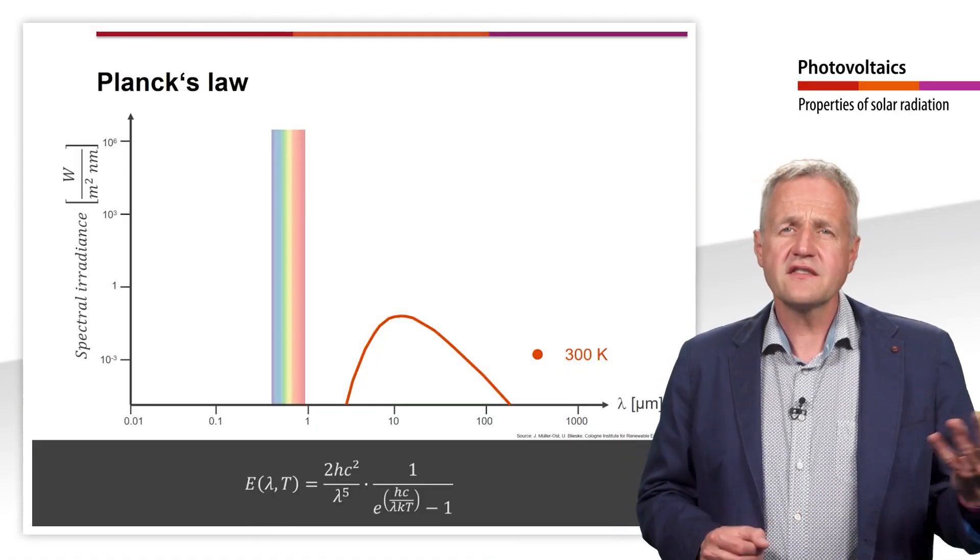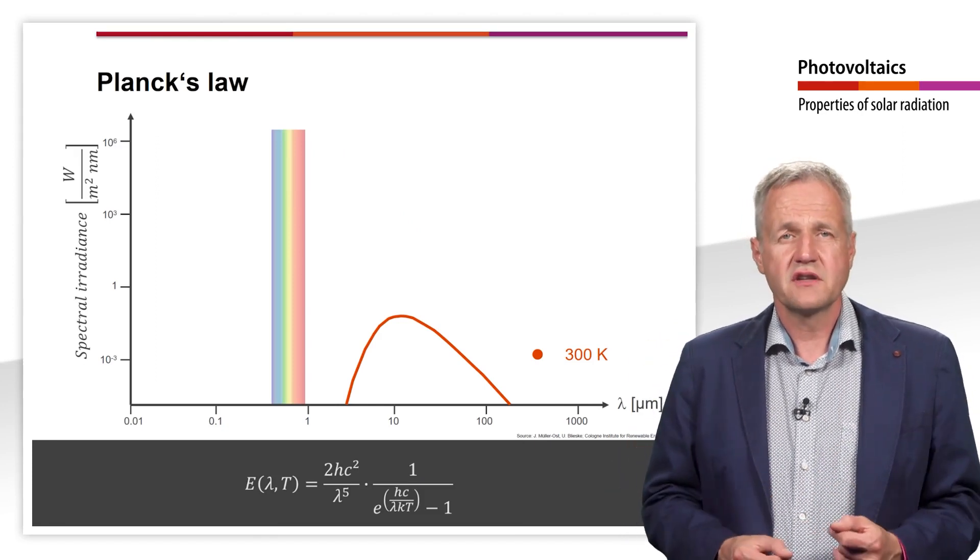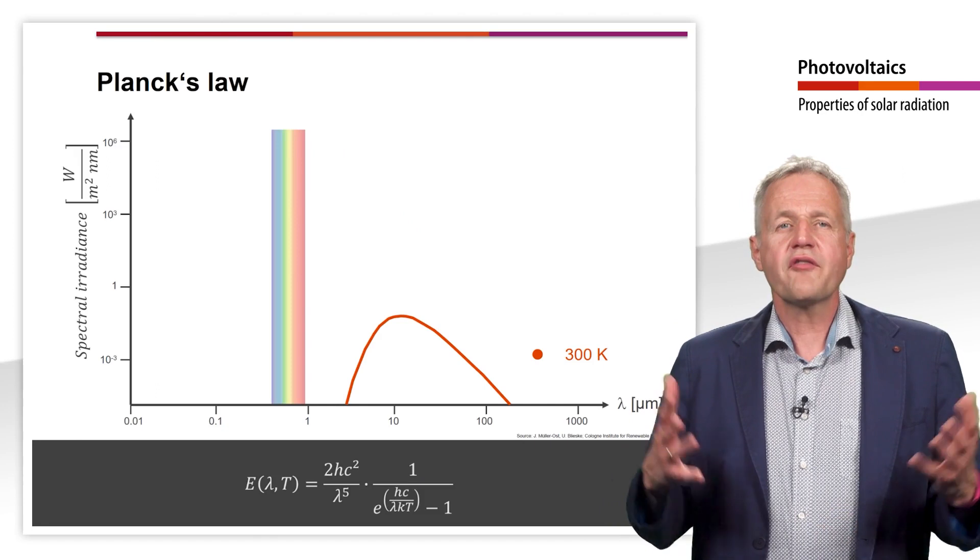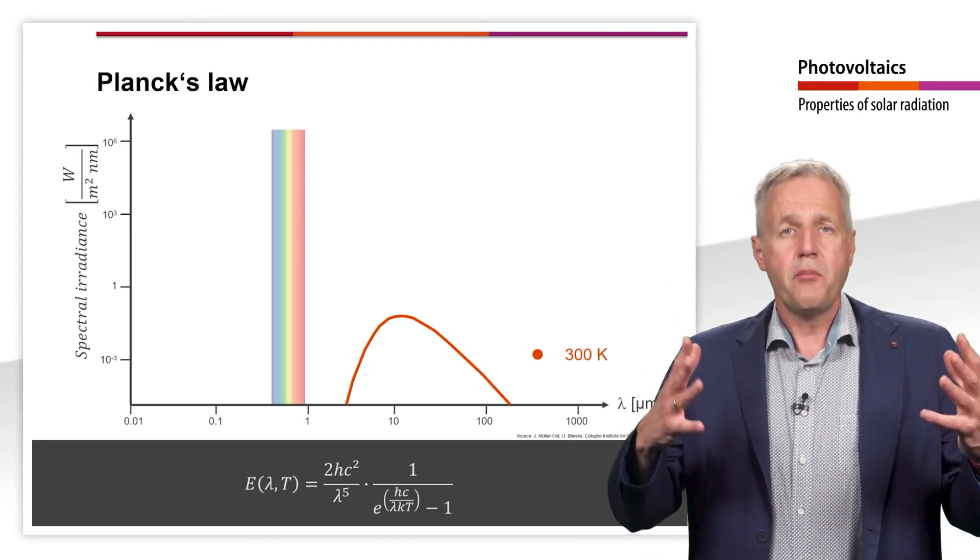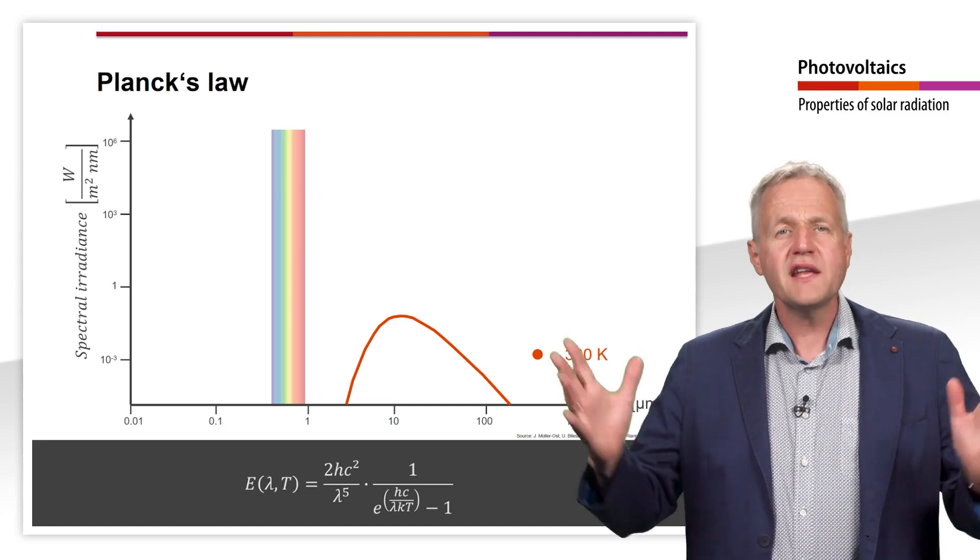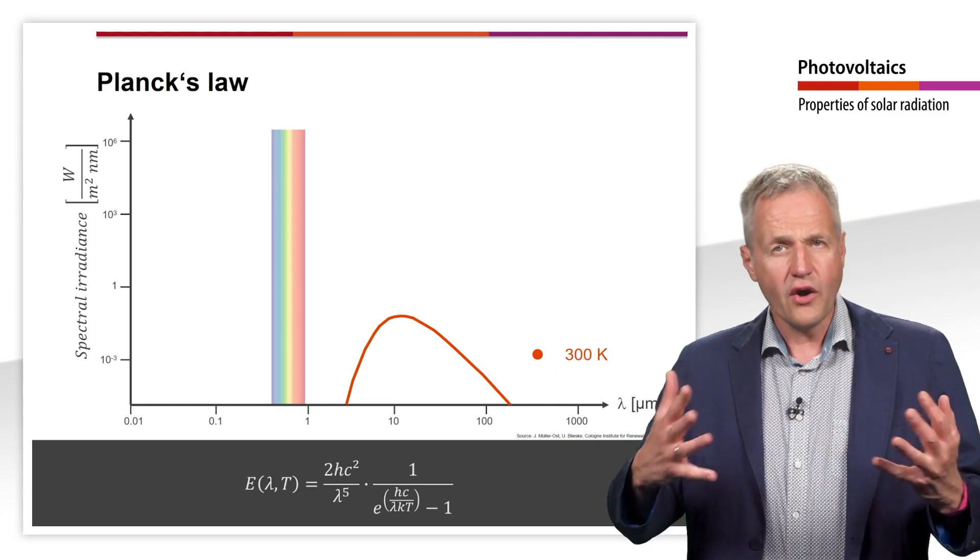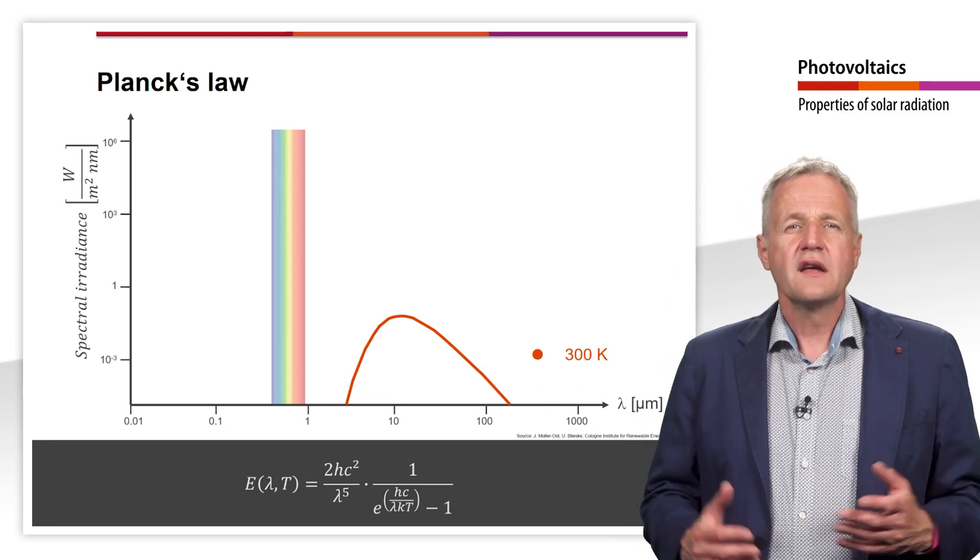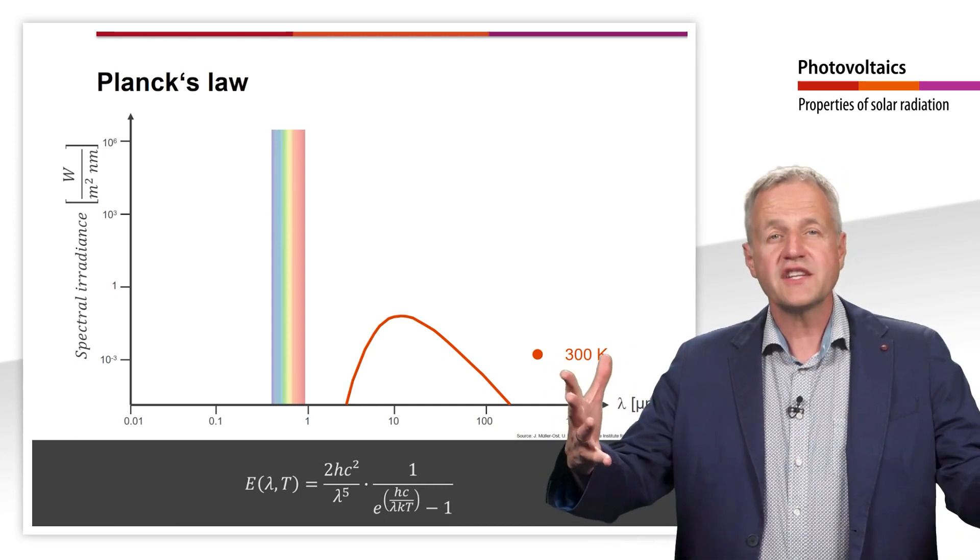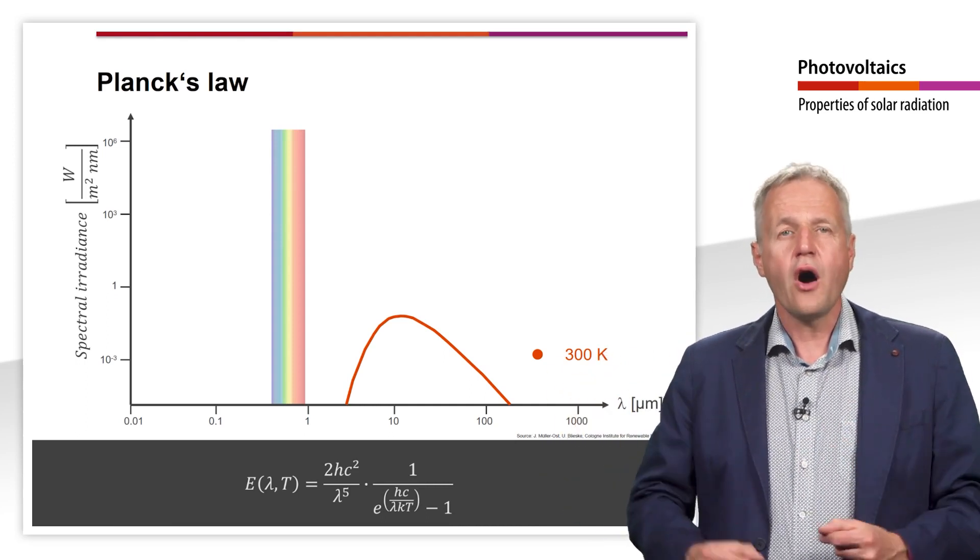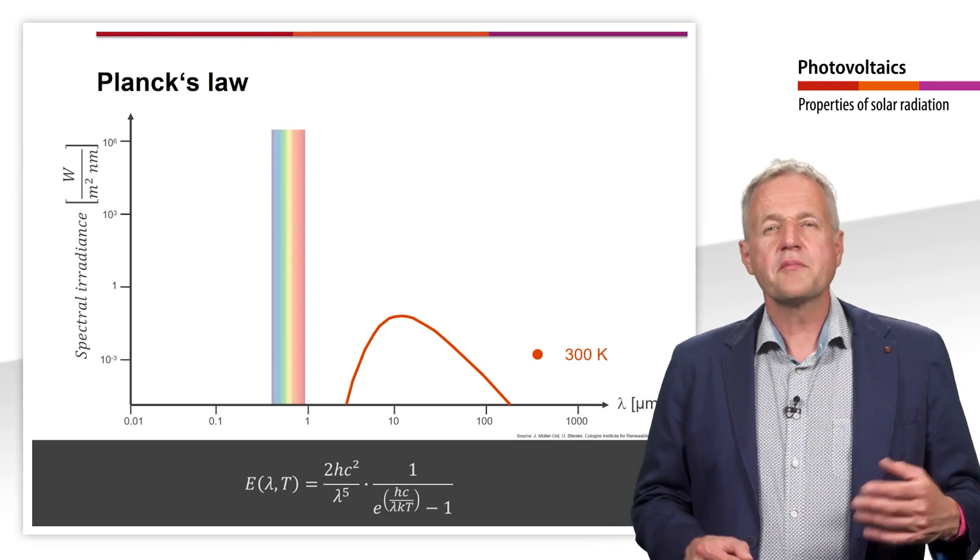Now, the question arises in which spectral range our sun emits radiation. To answer this question, we can first imagine the sun is a blackbody radiator. A blackbody is a body that completely absorbs all radiation of any wavelengths that hits it and has no reflection. If the blackbody has a temperature above absolute zero, it emits a certain radiation spectrum that depends only on its temperature. This spectrum is described by Planck's law.